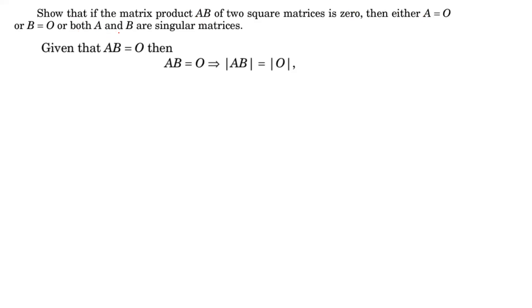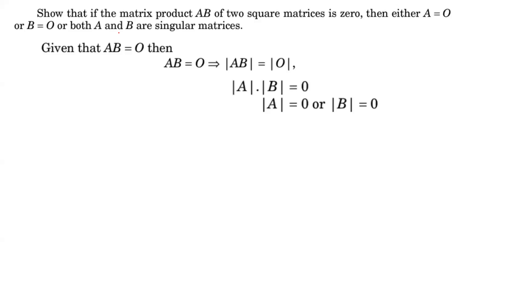If A times B is equal to 0, then since the product is equal to the 0 matrix, we can take the determinant of both sides. The determinant of A times B is equal to the determinant of the 0 matrix. Remember the properties of the determinant: the determinant of A times B can be written as the determinant of A times the determinant of B, and on the right-hand side the determinant of the 0 matrix is 0. So since the multiplication of two numbers is 0, it means that the first number is 0 or the second number is equal to 0.